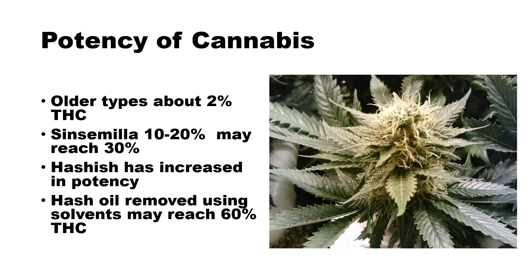Potency of cannabis. Older types — those the old hippies were smoking in the 1960s — probably ran about 2% THC. Sensimilla without-seed culture has gotten it up to 10 to 20%. Research from Colorado, where it's recreationally legal, shows levels may be reaching 30% or more. Other cannabis products such as hashish have even higher potency. Hash oil, which is extracted using solvents to remove all the resin from the leaves, may reach 60% THC. Taking a drug that goes from 2% to 60% — a 30-times increase — will clearly have very different results as the concentration increases.